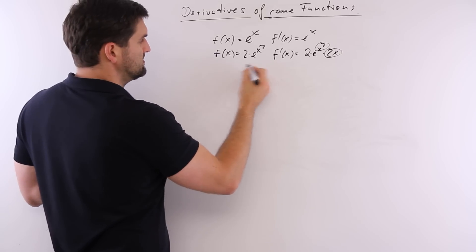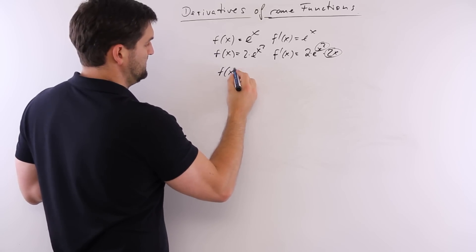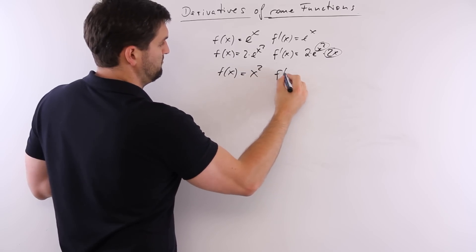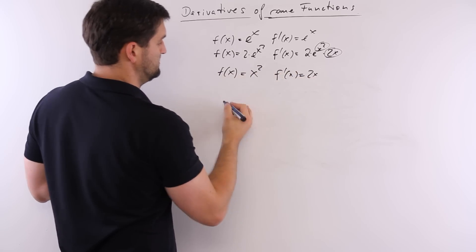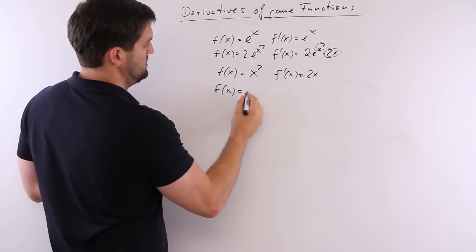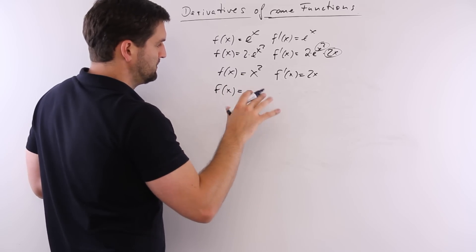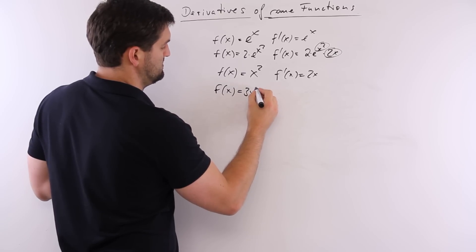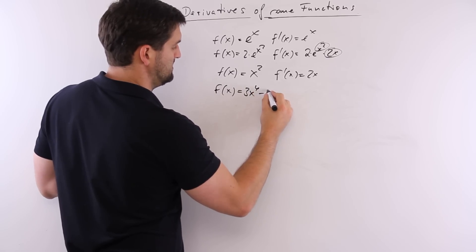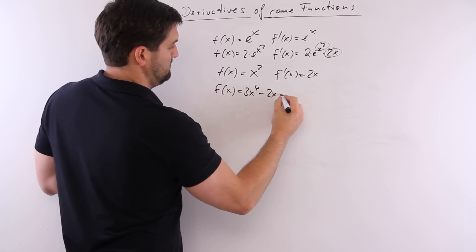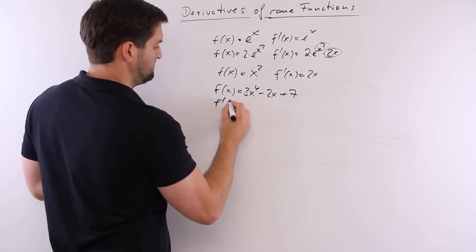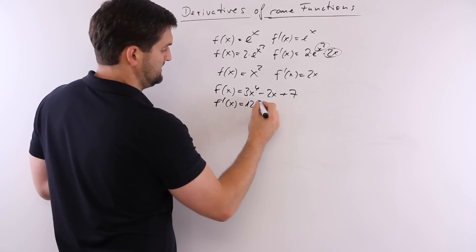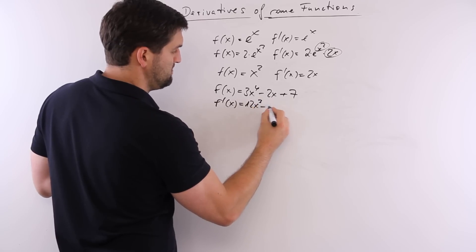The easy ones are f(x) equals 2x squared. f prime would be 2x. Or here, going a little bit crazy, like 3x to the power 4 minus 2x plus 7. The derivative would be 12x to the power 3 minus 2.